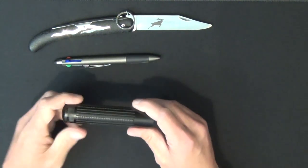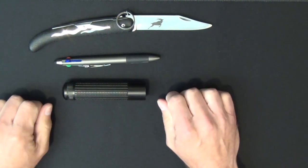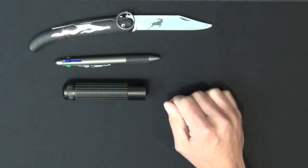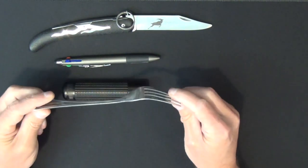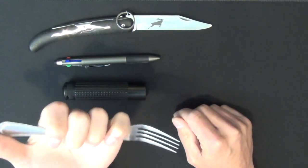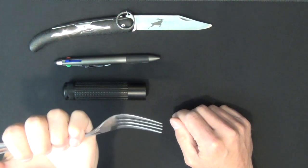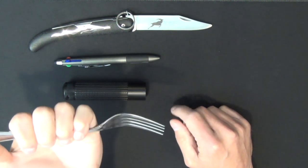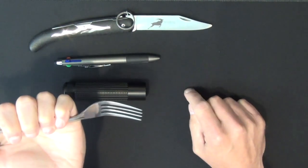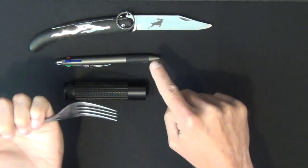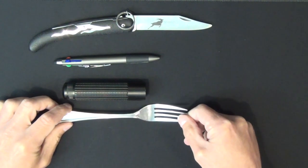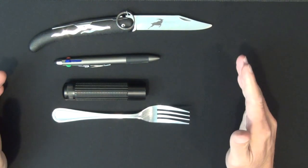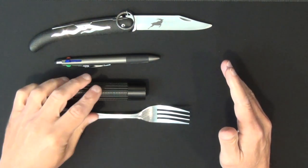And if push comes to shove and you're out at like your favorite restaurant, whatever that happens to be, yeah, there's a fork. You can actually do similar motions with a fork with as much ferocity using the tines of a fork as you can with the Kudu, a pen, or a standard tactical flashlight that you would carry in your pocket.